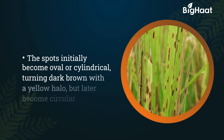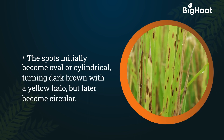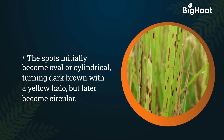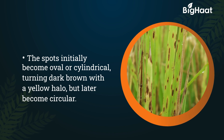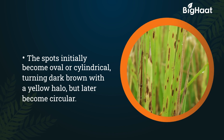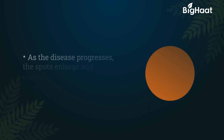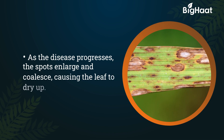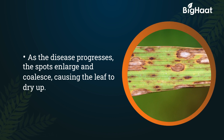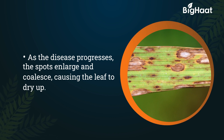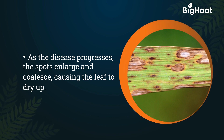The spots initially become oval or cylindrical, turning dark brown with a yellow halo, but later become circular. As the disease progresses, the spots enlarge and coalesce, causing the leaf to dry up.